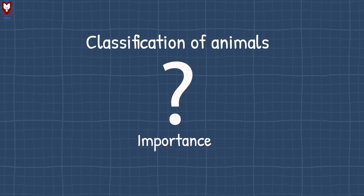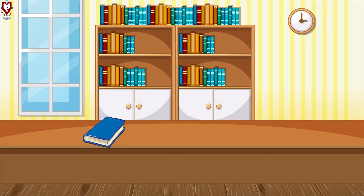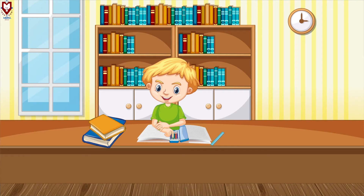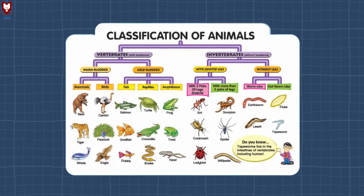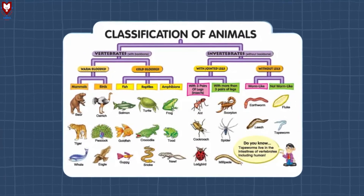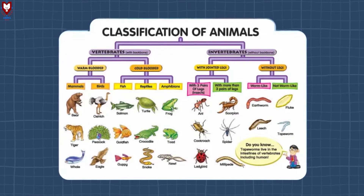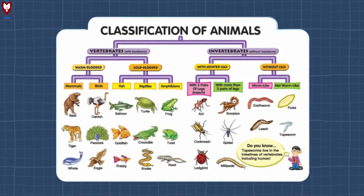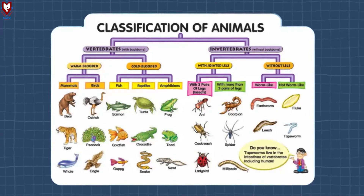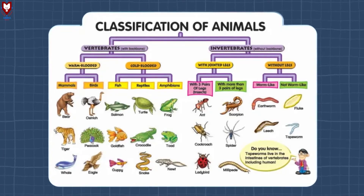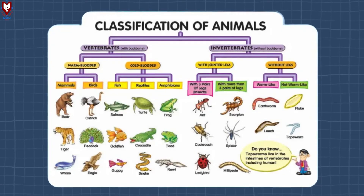What is the importance of the classification of animals? Scientists have organized different animal species by dividing this large group of animals into smaller groups so that it is easier for them to study. In this video, we will learn about the classification of animals.